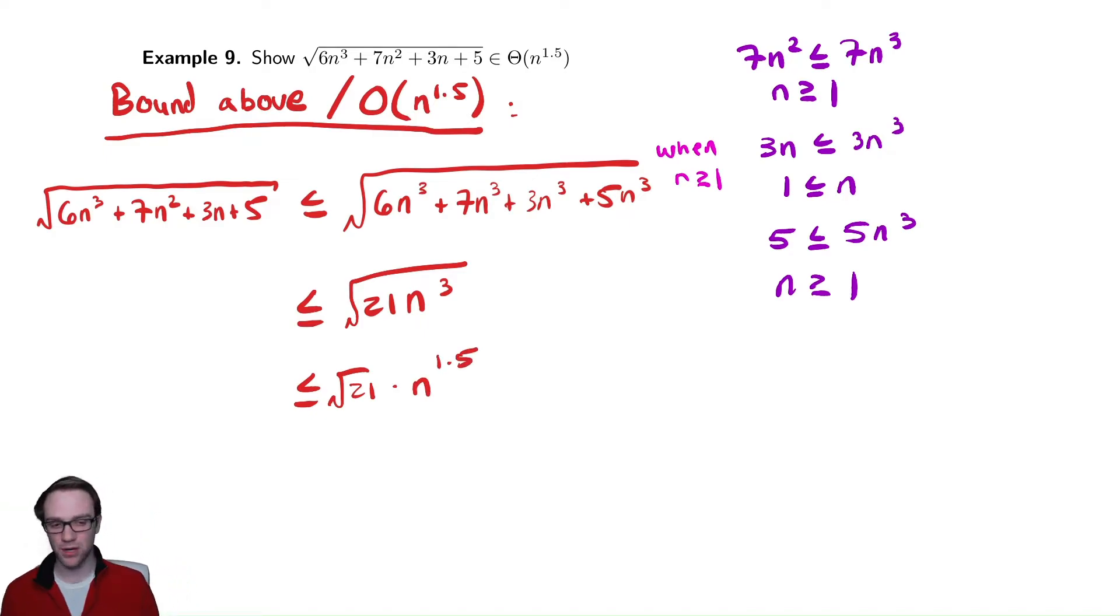In our theta notation, we're going to be finding two constants, one for an upper bound and one for a lower bound. Typically, the upper bound constant we call c2 and the lower bound constant we call c1. If you look at the definition, that was what we did.